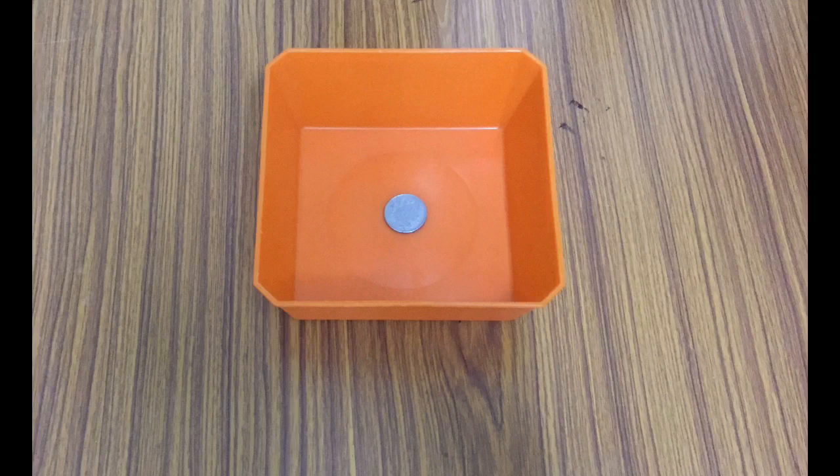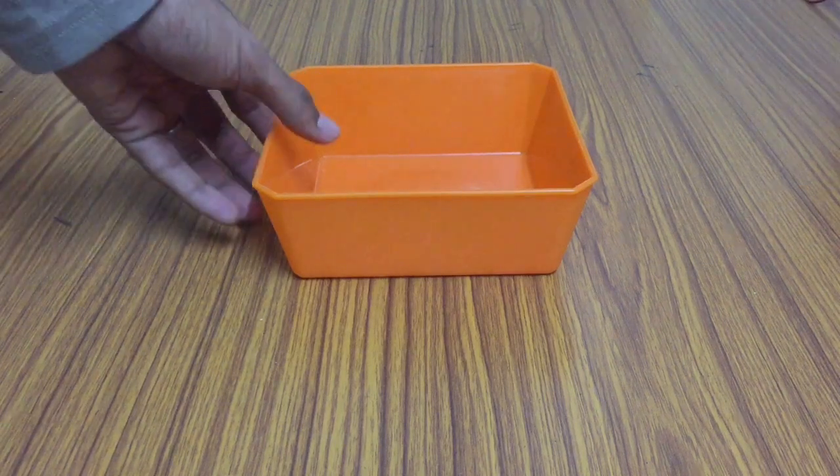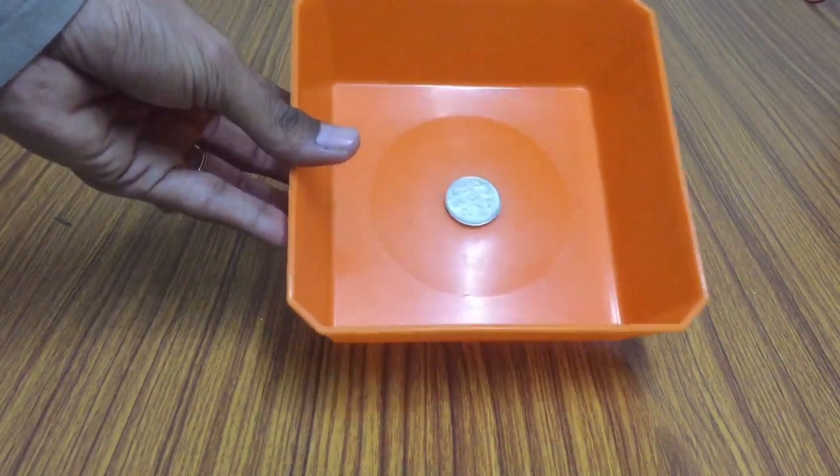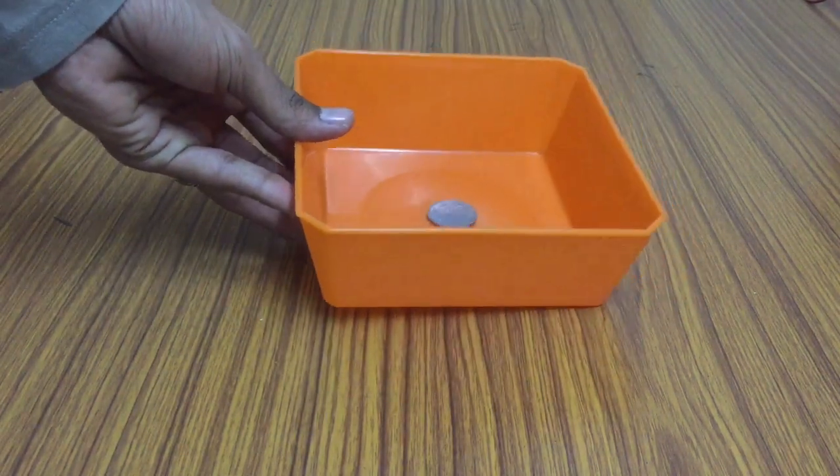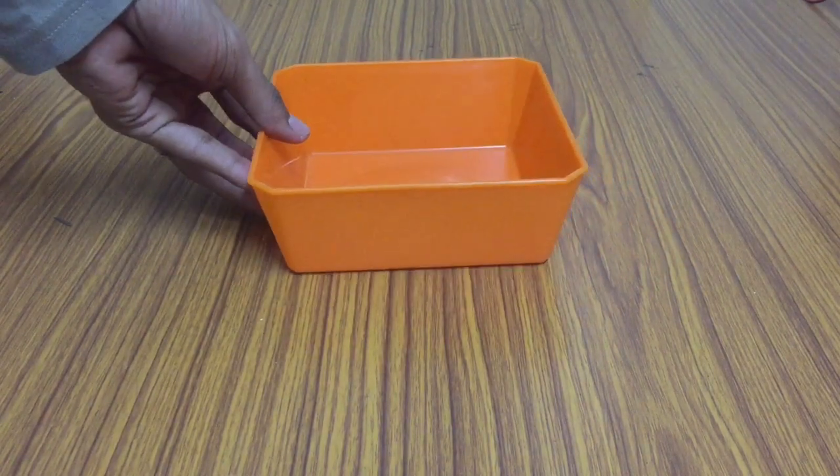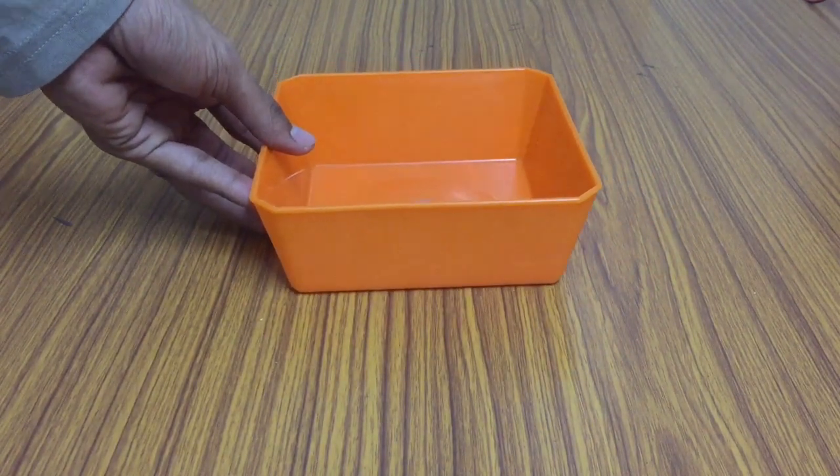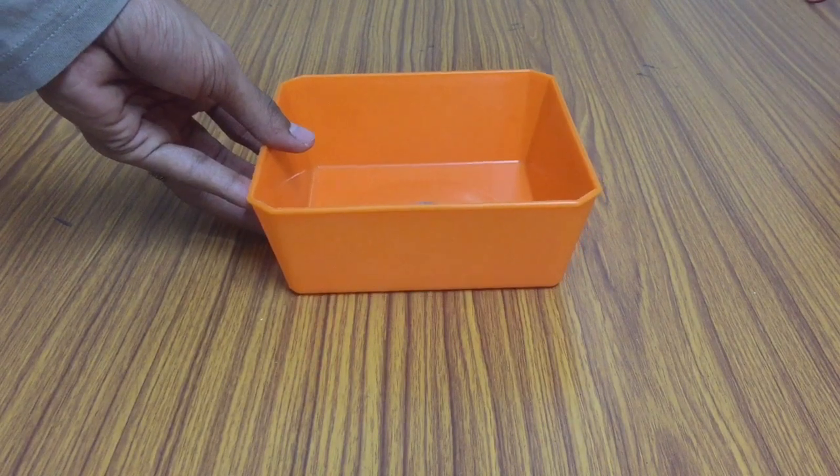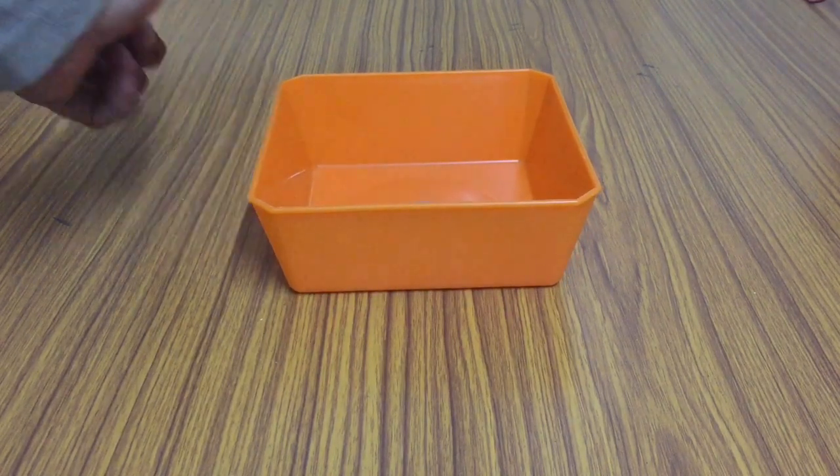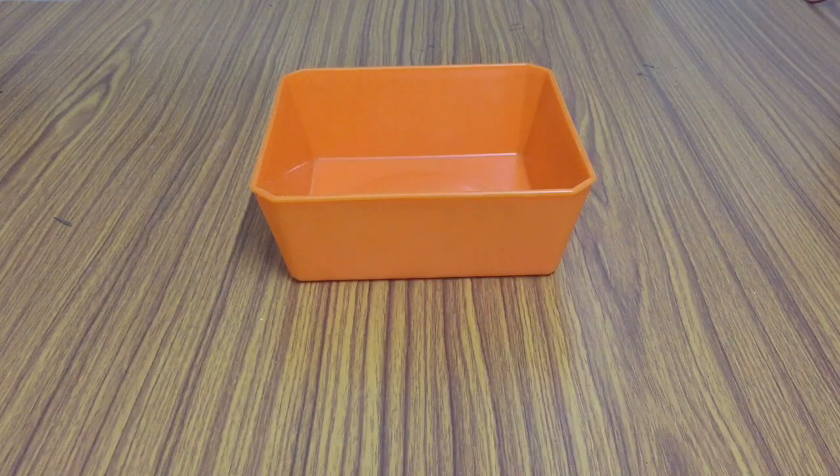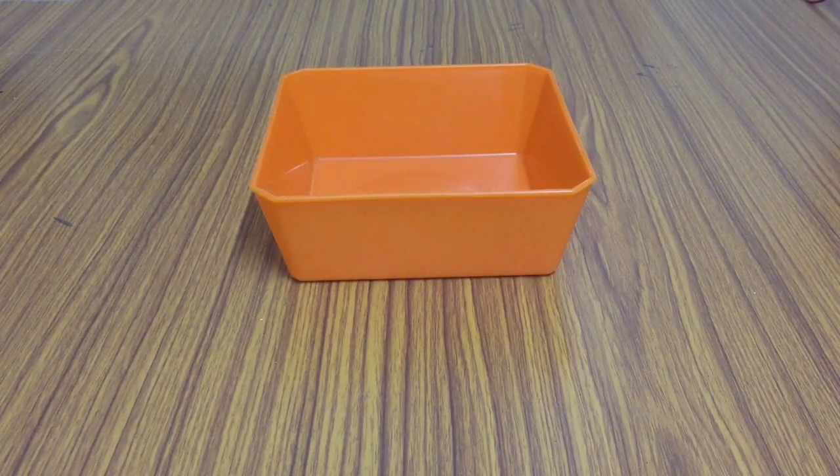I took a bowl and fixed a coin at the centre of its bottom. Now I arranged this bowl in such a position that the coin just disappears behind the wall of the vessel. In this position I am unable to see the coin. But let's see what happens if I pour water into this.